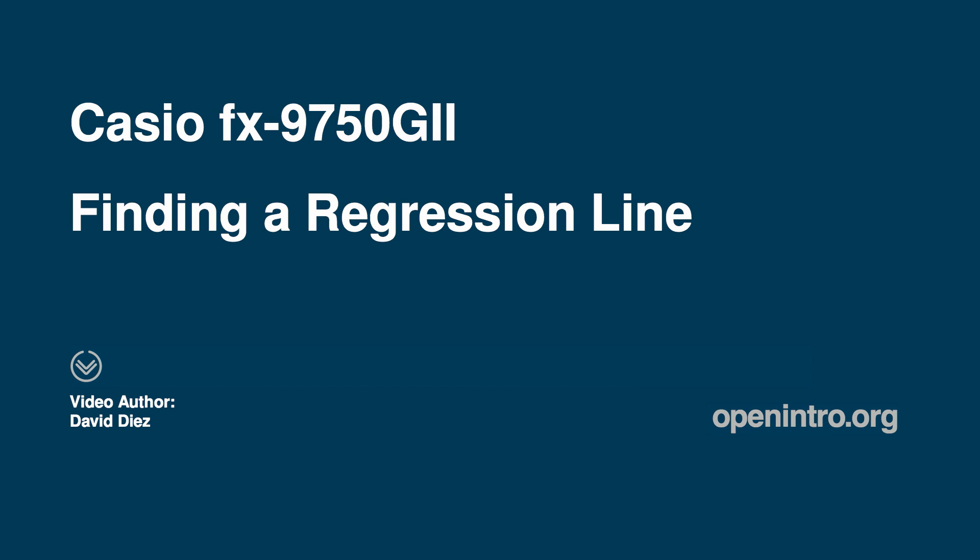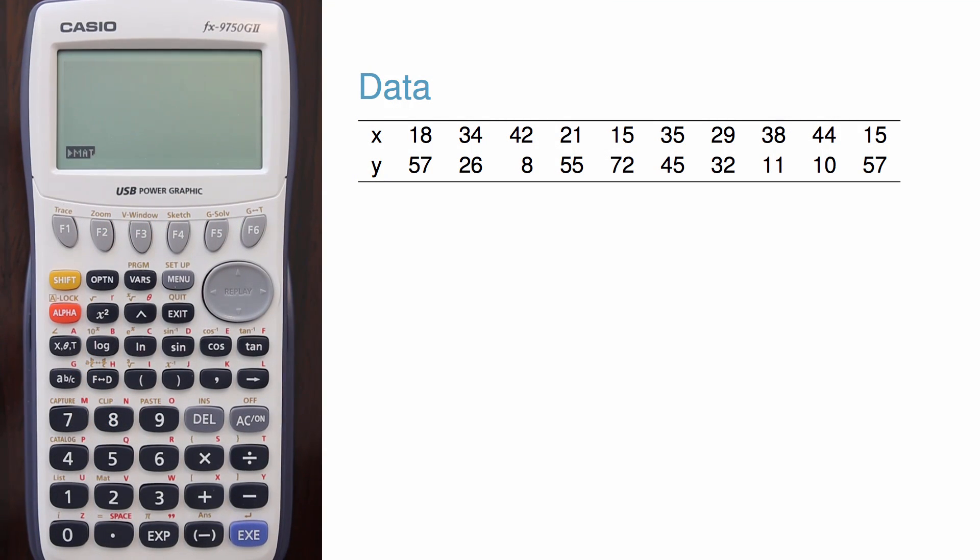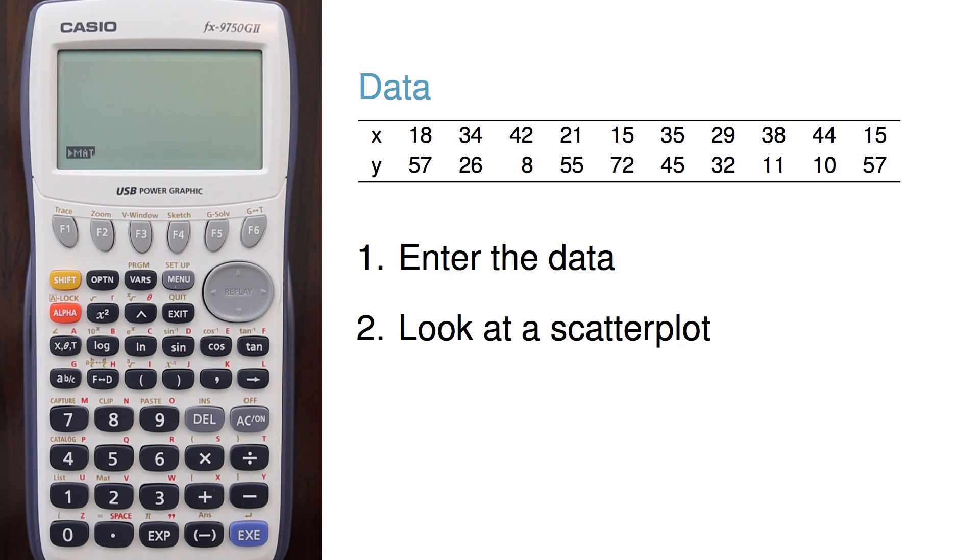I'm going to cover how to enter data and get a regression line summary using a CASIO 9750 graphing calculator. I'm going to do this in three stages: first, enter the data, then look at a graph of the data, and finally fit a regression line.